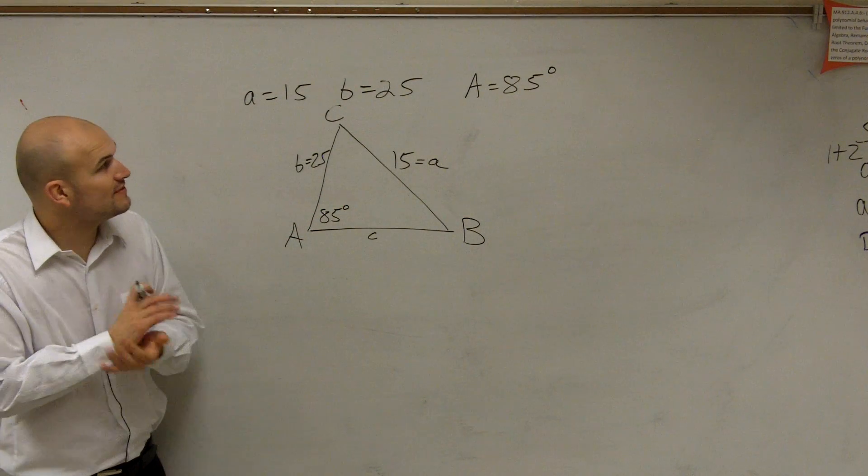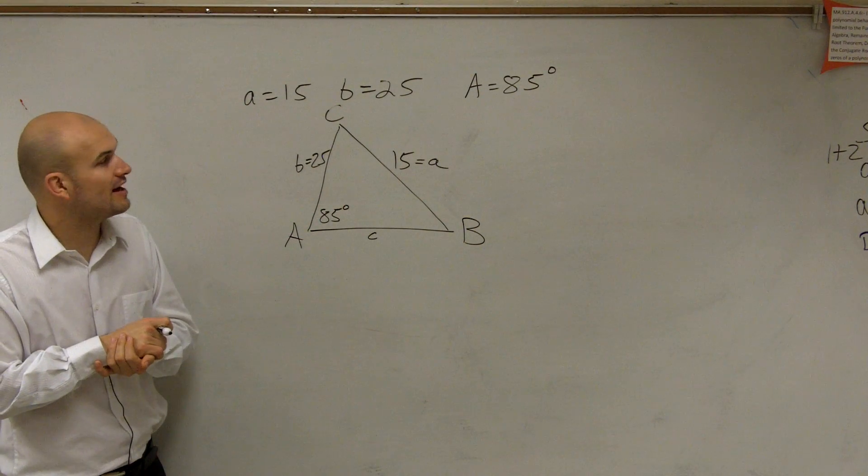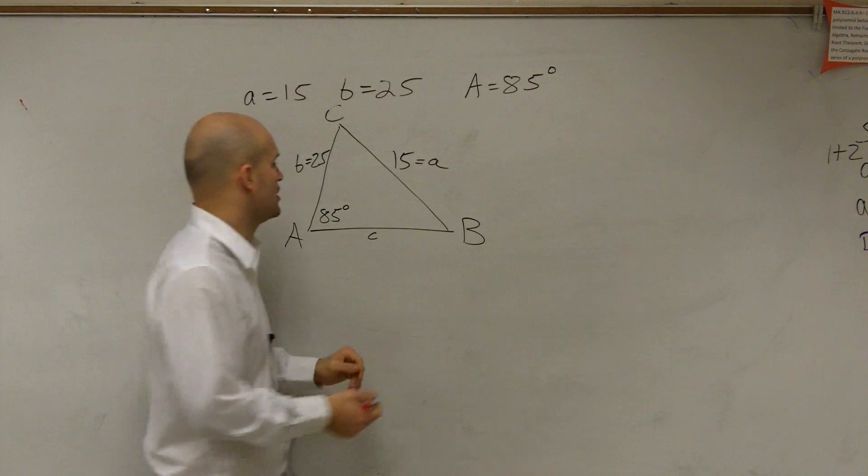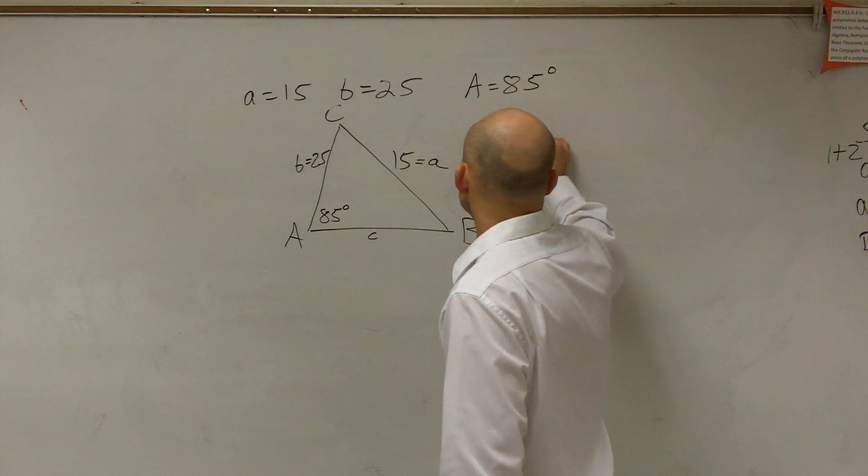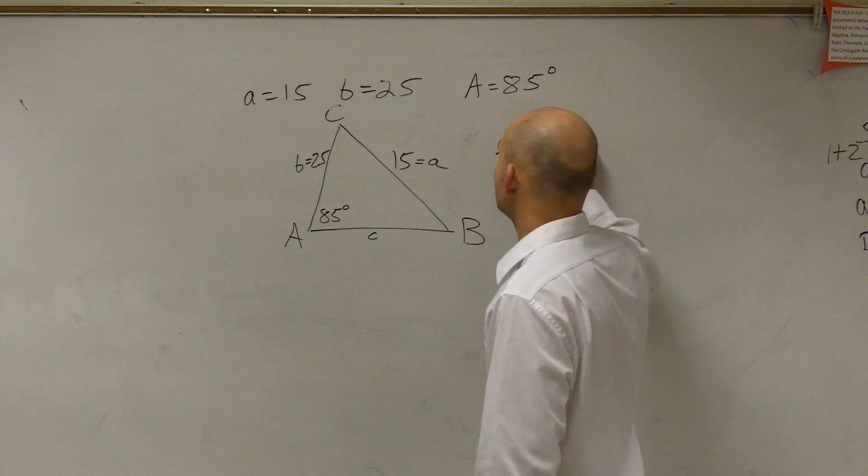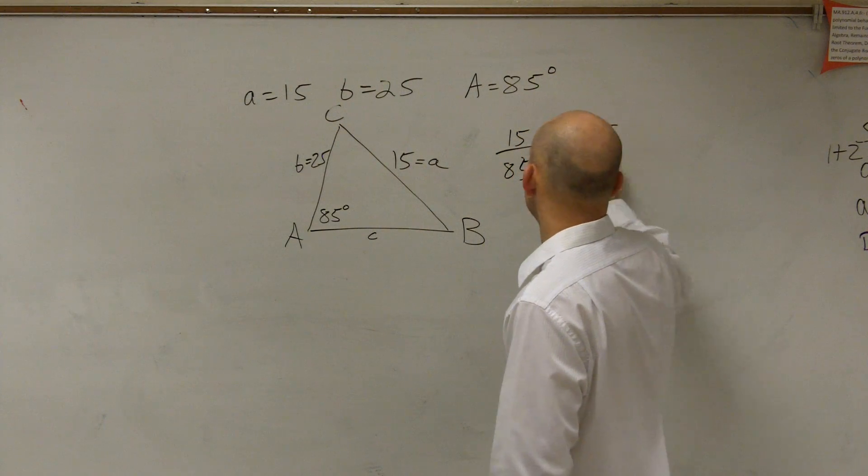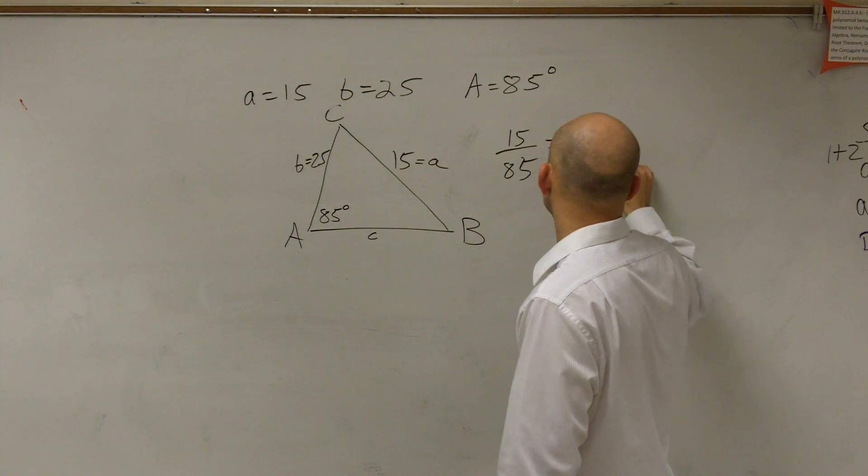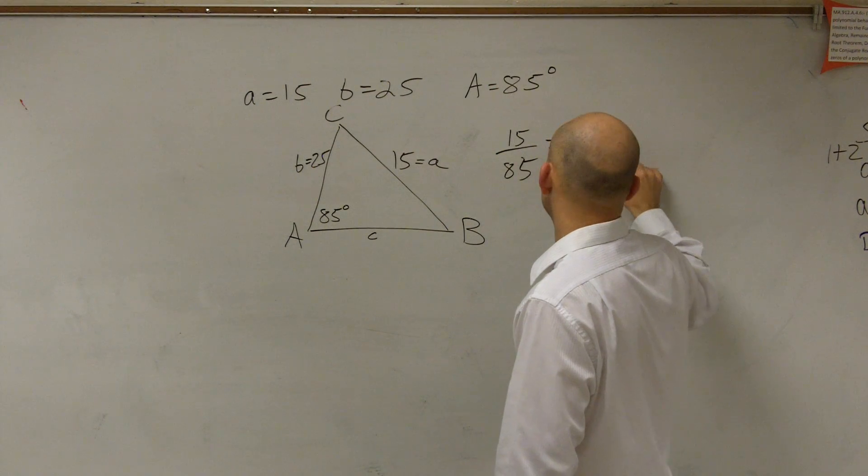So now we have a equals 15, b equals 25, A equals 85. So now we can just apply our law of sines. So I have 15 over 85 equals 25 over the sine of B.